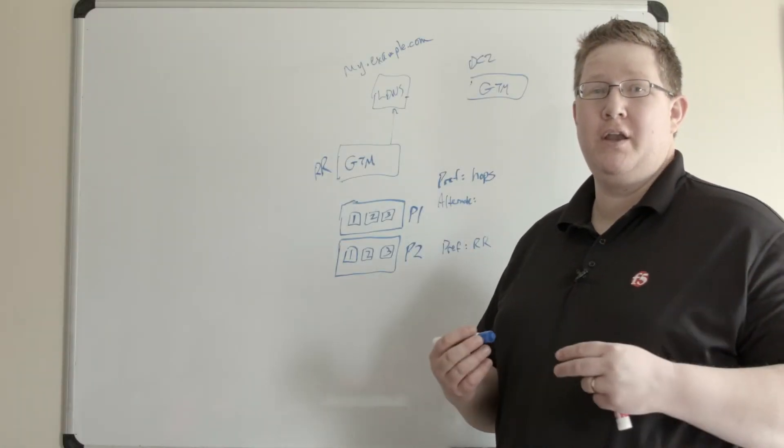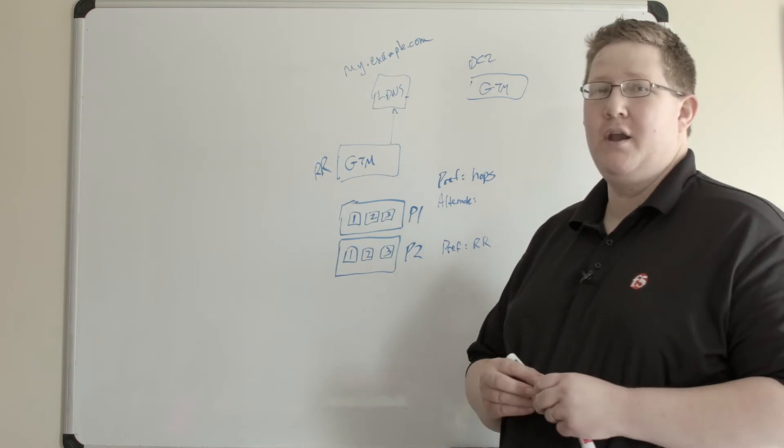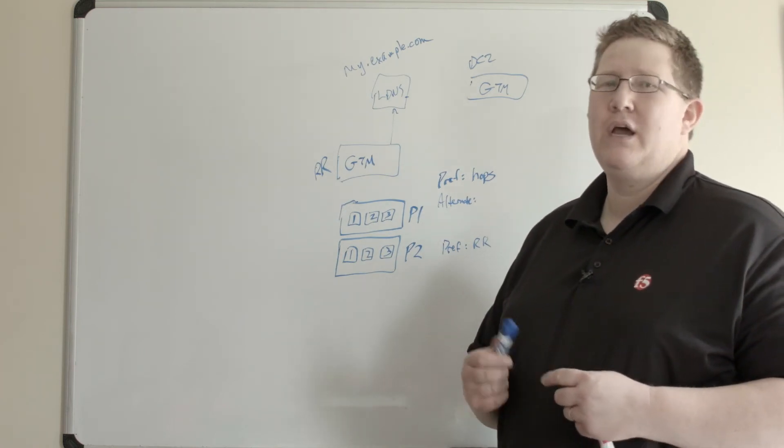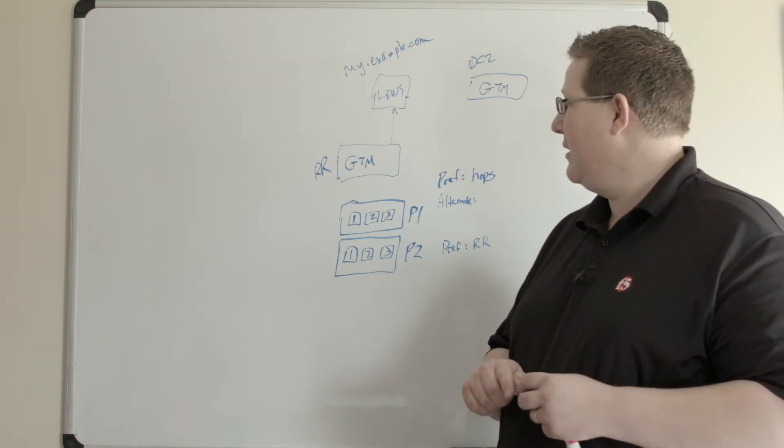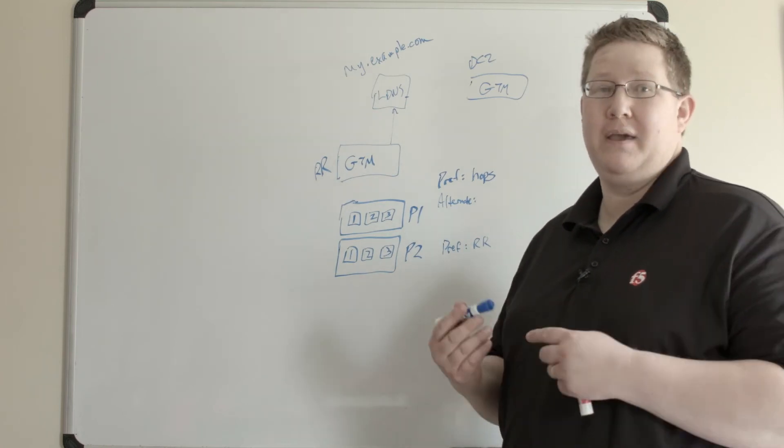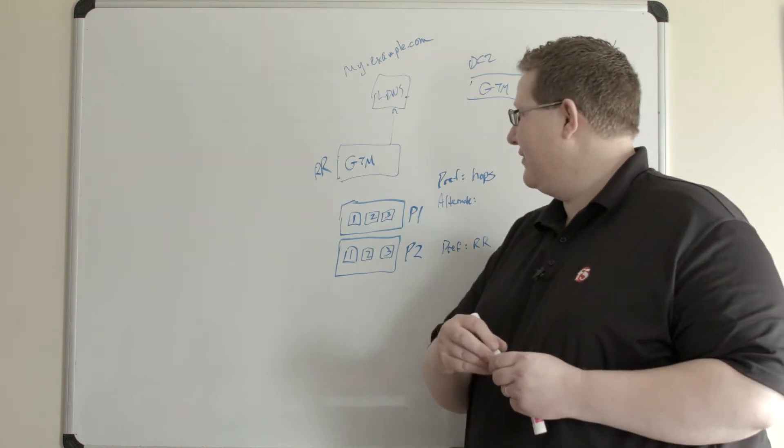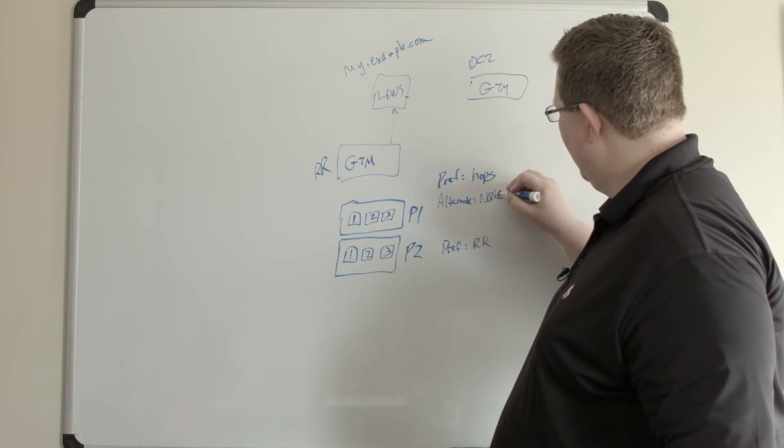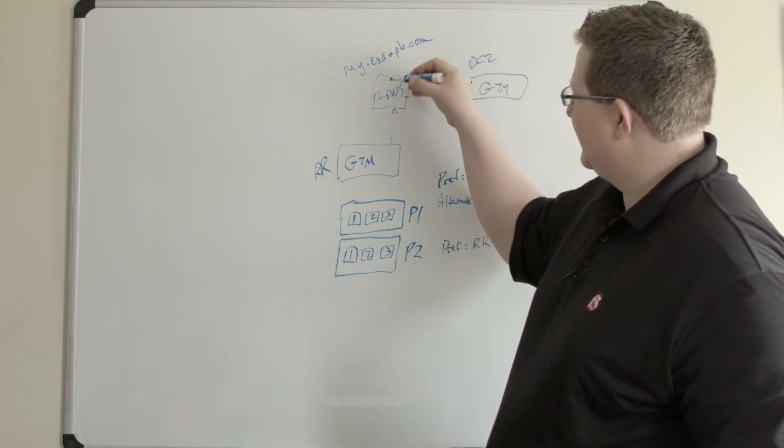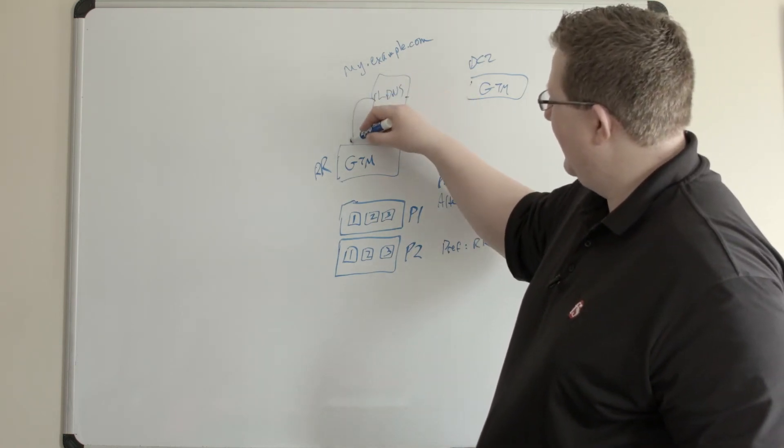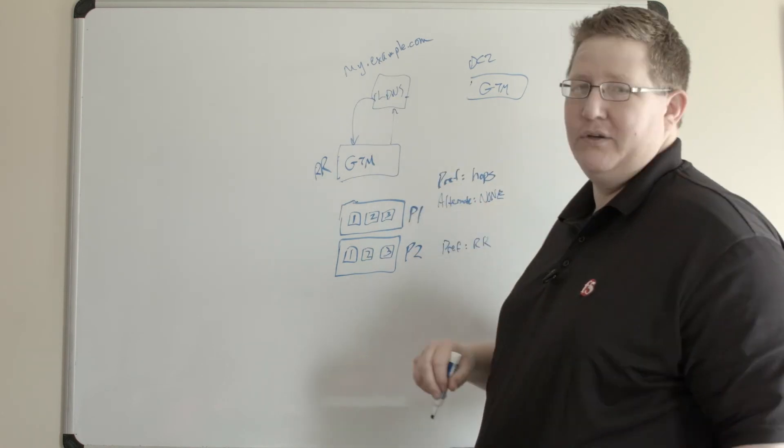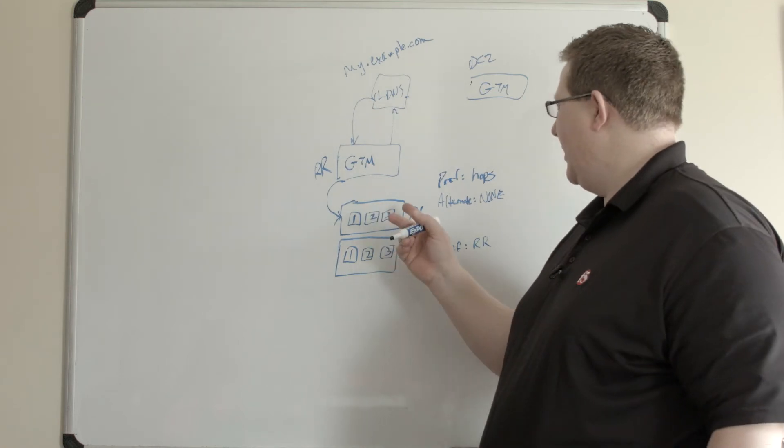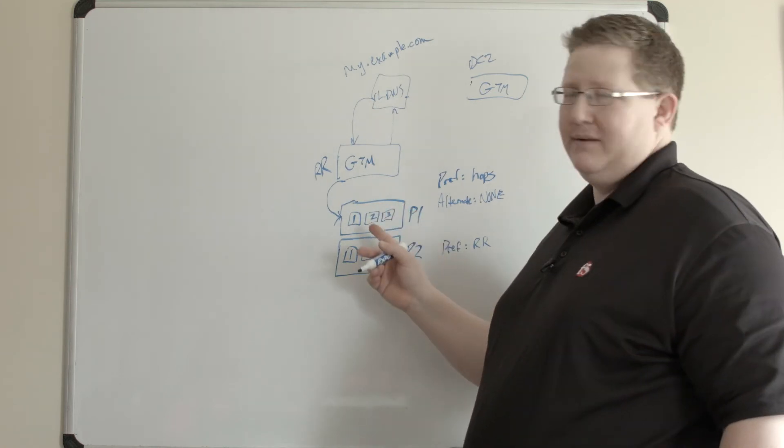Now we're going to move on to the none selection. None is a little bit more unique in that with return to DNS and drop packet, that's more instructions for the LDNS to do something different. With none, you're telling GTM to do something a little different. What happens is we're going to stay with our example of hops here. Third request comes in here from the LDNS, GTM is going to round robin that back to pool one, and in pool one I still don't have any data here.